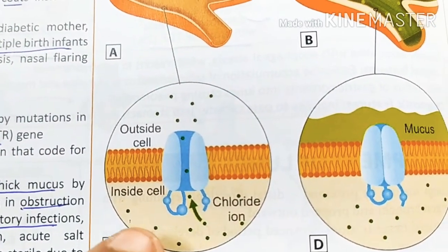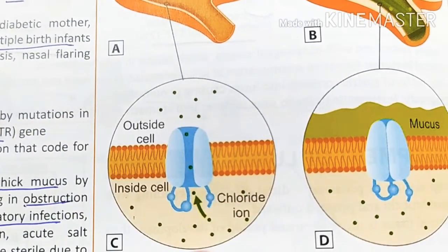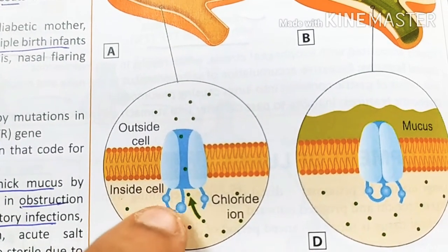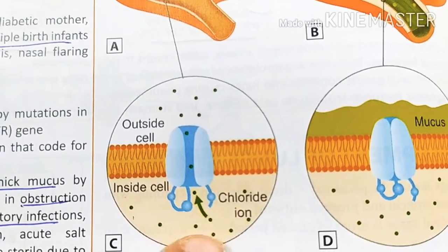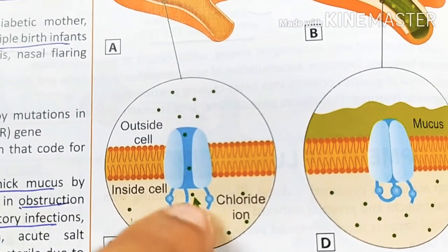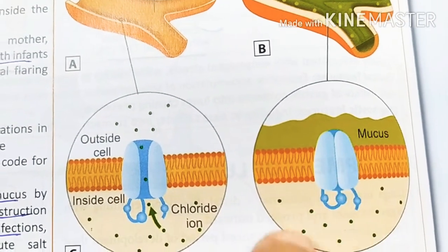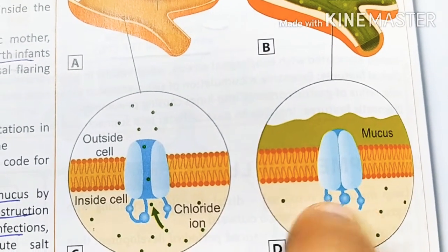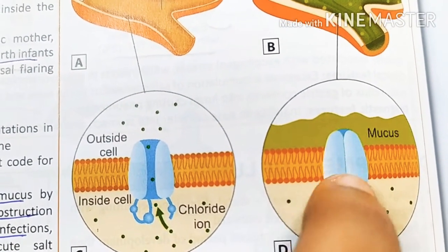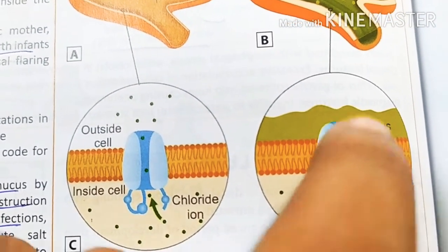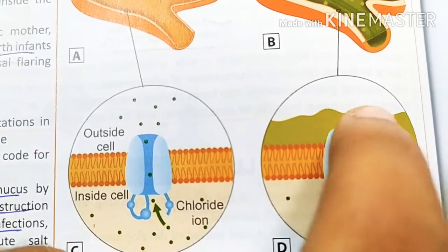Because of the mutation, chlorides cannot be passed from inside the cell to the outside, so they accumulate inside. These channels are closed, and you can see the mucus accumulation on the outside of the cell.